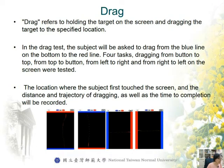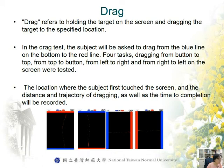The third task was drag. Drag refers to holding a target on the screen and dragging it to a specific location. In the drag test, the subject is asked to drag from the blue line on the bottom to the red line. Four tasks were tested: dragging from bottom to top, top to bottom, left to right, and right to left on the screen. The location where the subject first touched the screen, the distance and trajectory of dragging, as well as the time to complete, were recorded.